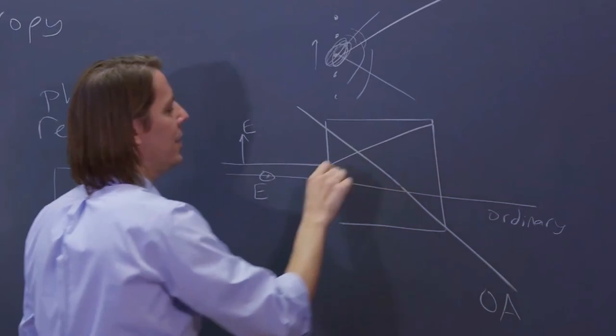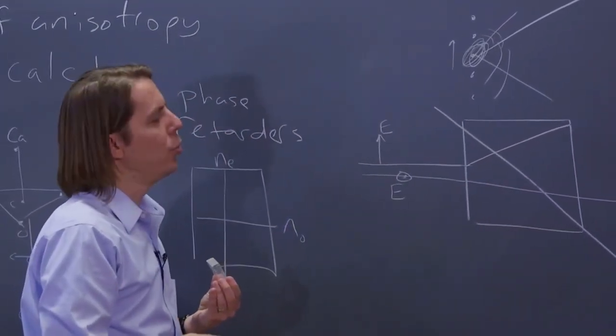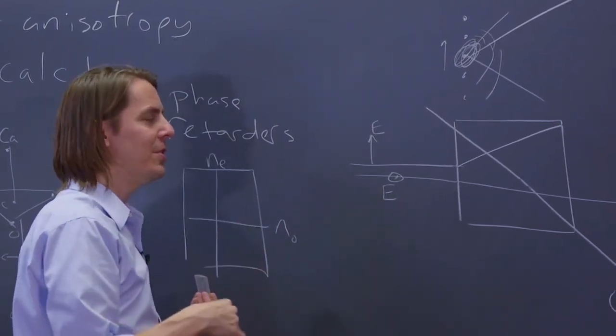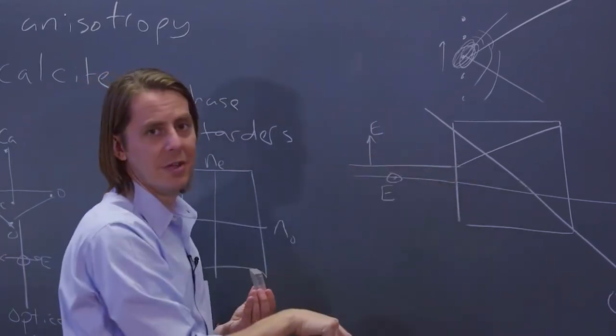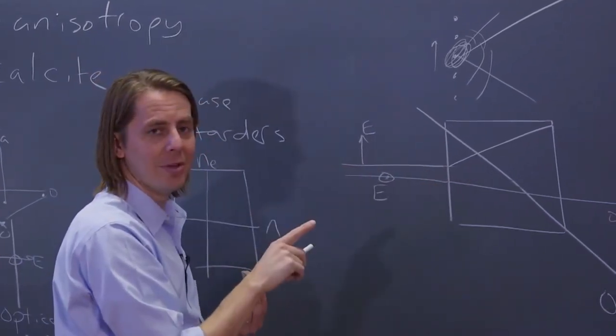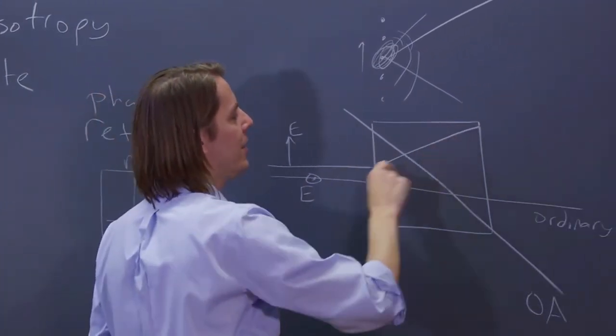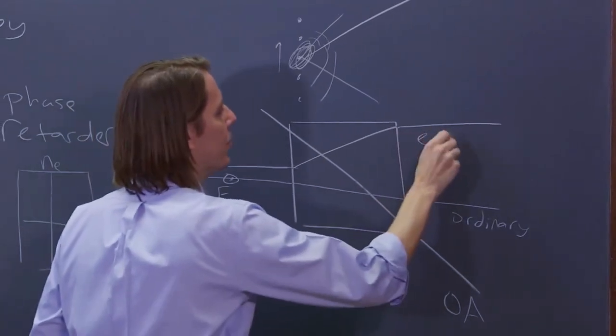So the extraordinary ray does this extraordinary thing, is it refracts at an angle even though it hit the plane, the surface normal. So according to the law of refraction we derived in the earlier unit light on glass, it should go in straight. But we assumed an isotropic index of refraction. It's not isotropic. Here, it's at an angle, so it goes off like this and then it goes straight again. And this is the extraordinary ray.